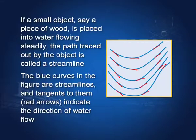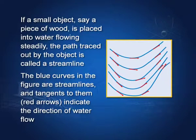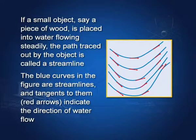These are streamlines. A streamline is a blue curve and the tangent to it gives the direction of flow of water. If a small object, say a piece of wood, is placed into water flowing steadily, the path traced out by the object is called a streamline. If you want to see what a streamline looks like, stand at the bank of a large canal, float a paper boat, and see the direction it takes. It will flow steadily in the same direction and the path it traces is called a streamline. The tangent to a streamline at a point gives the direction of flow of water.